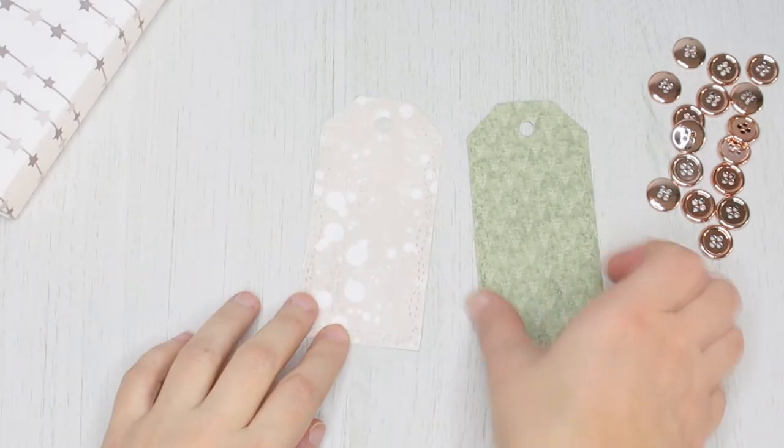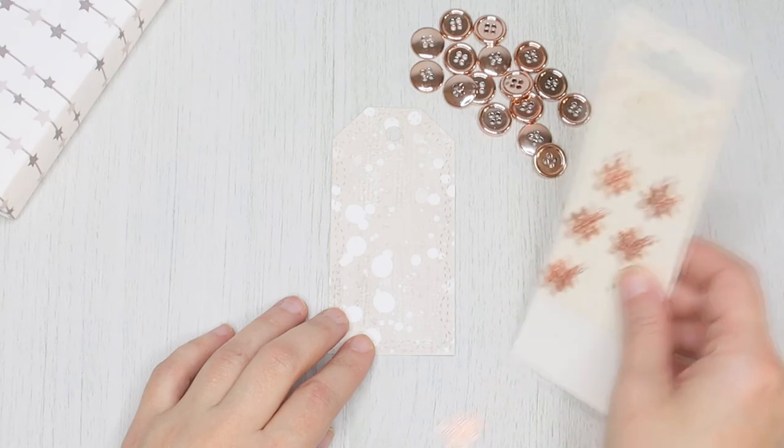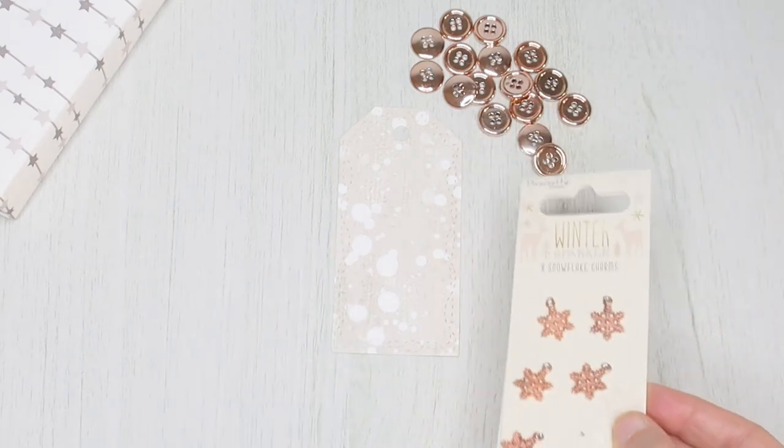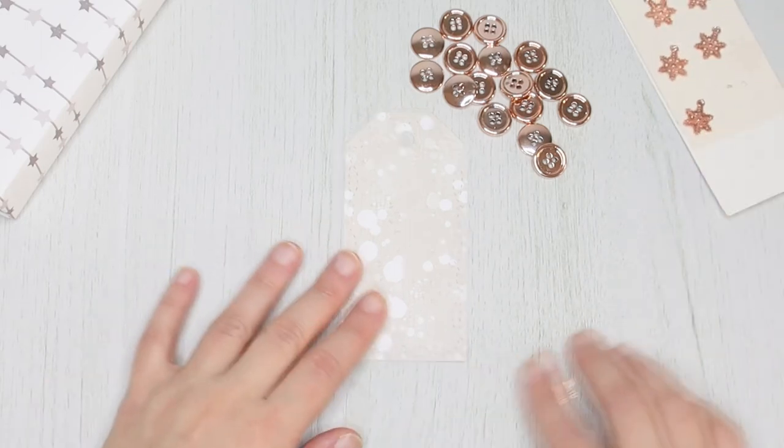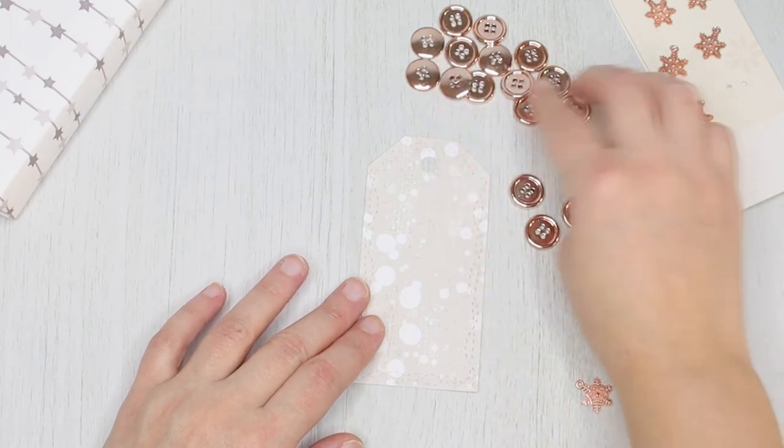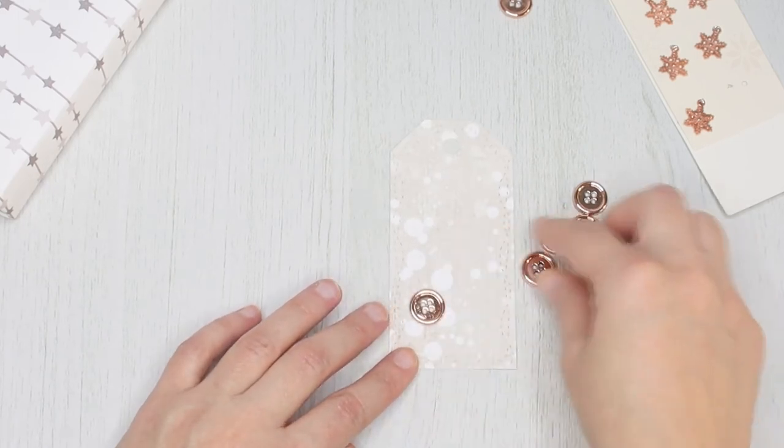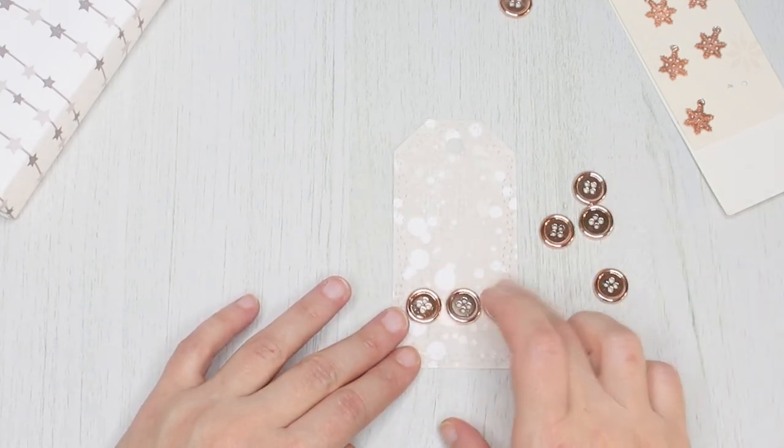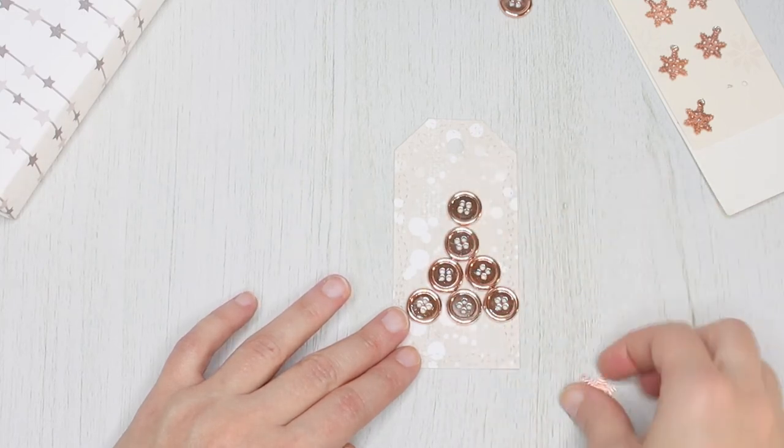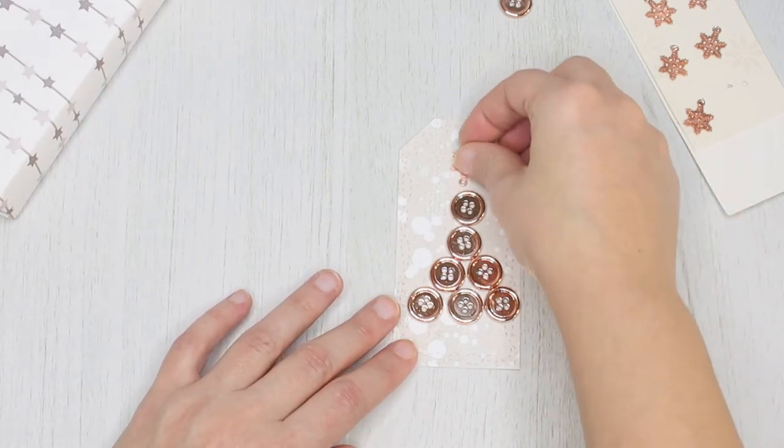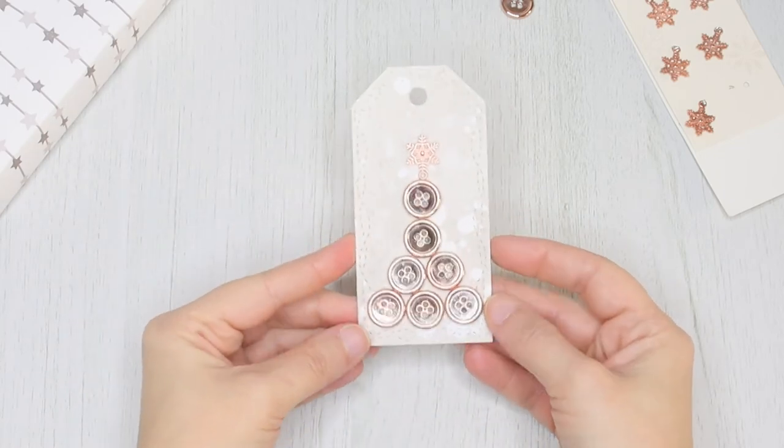For the first tag I'm using the winter sparkle buttons and the snowflake charms. So I'm taking a few buttons and arrange them in a Christmas tree shape. Then I'm just adding a snowflake on top instead of the star. I used my hot glue gun for gluing everything onto the tag. So that's it for the first tag.